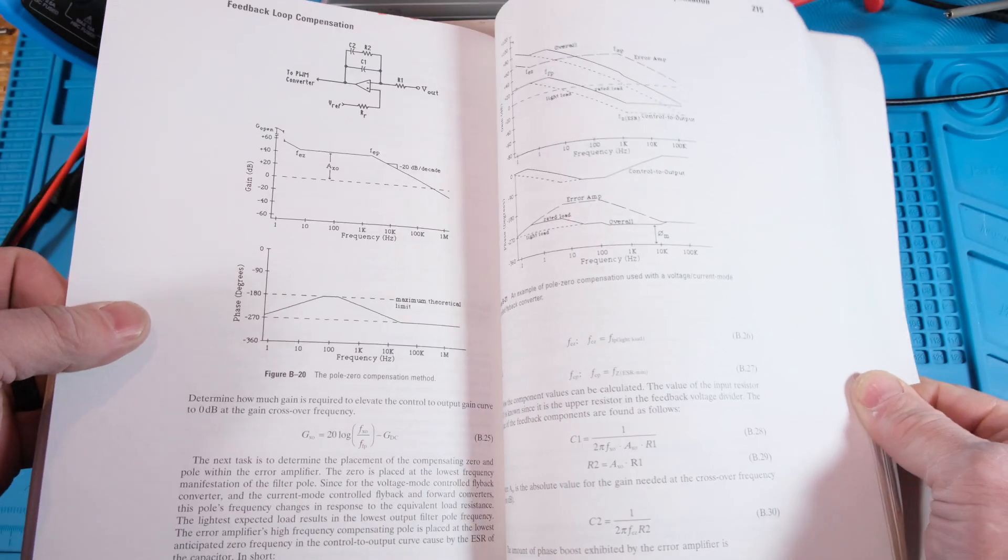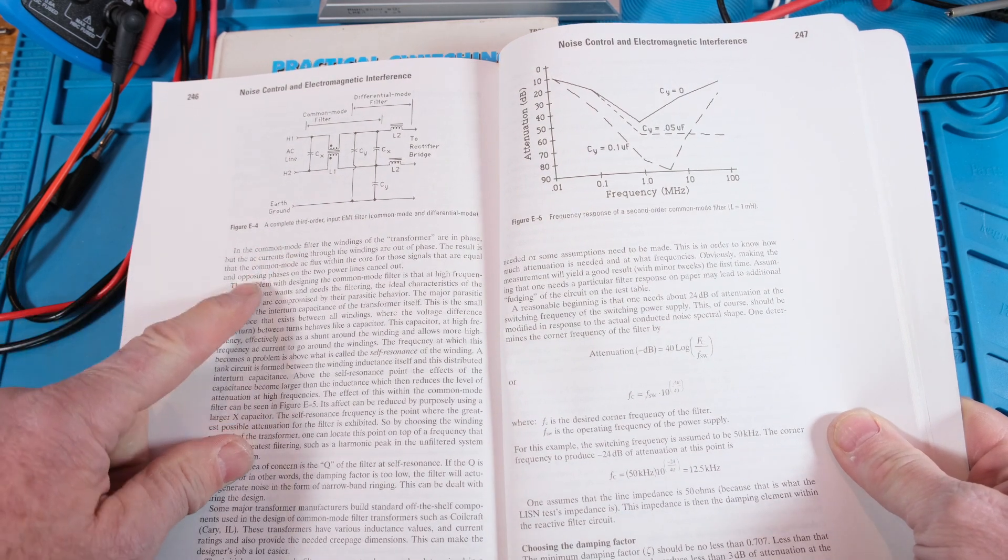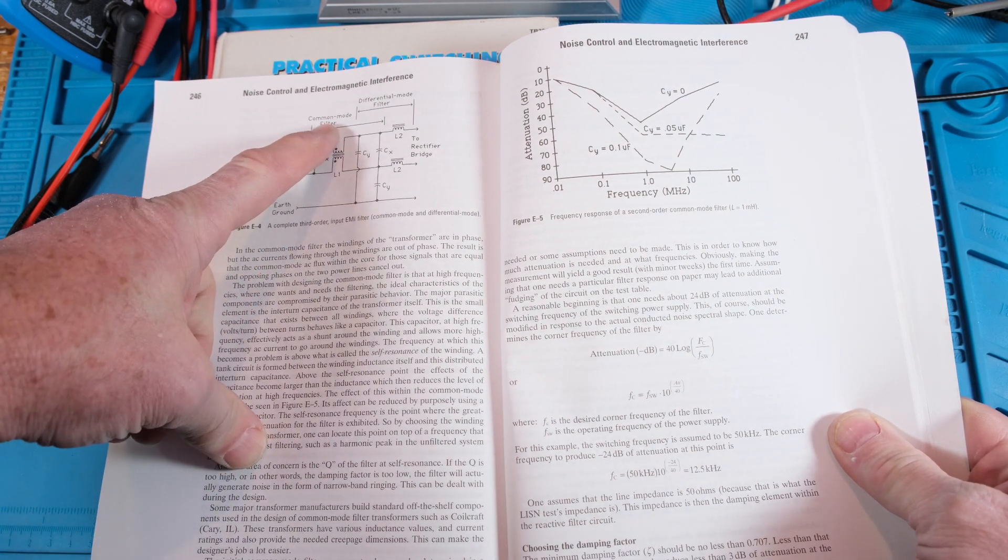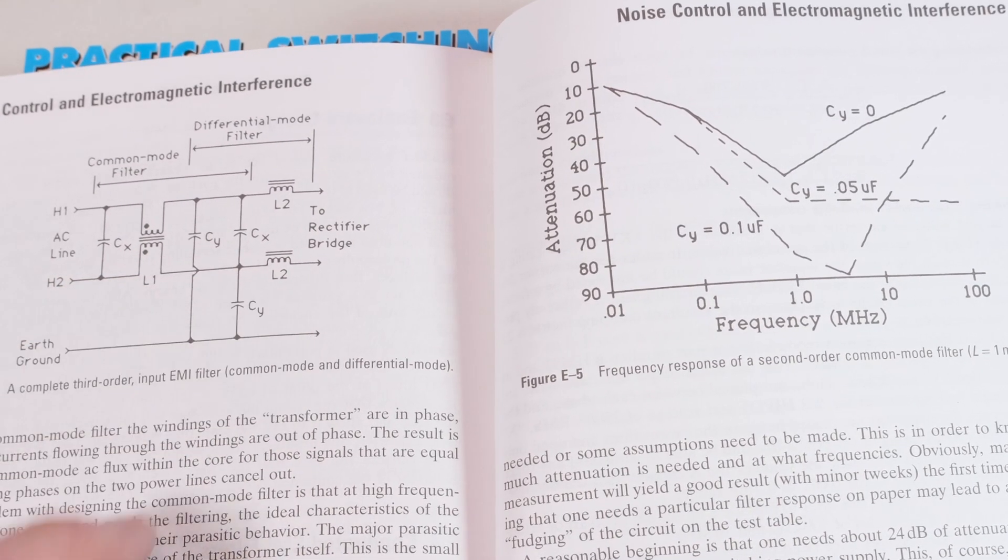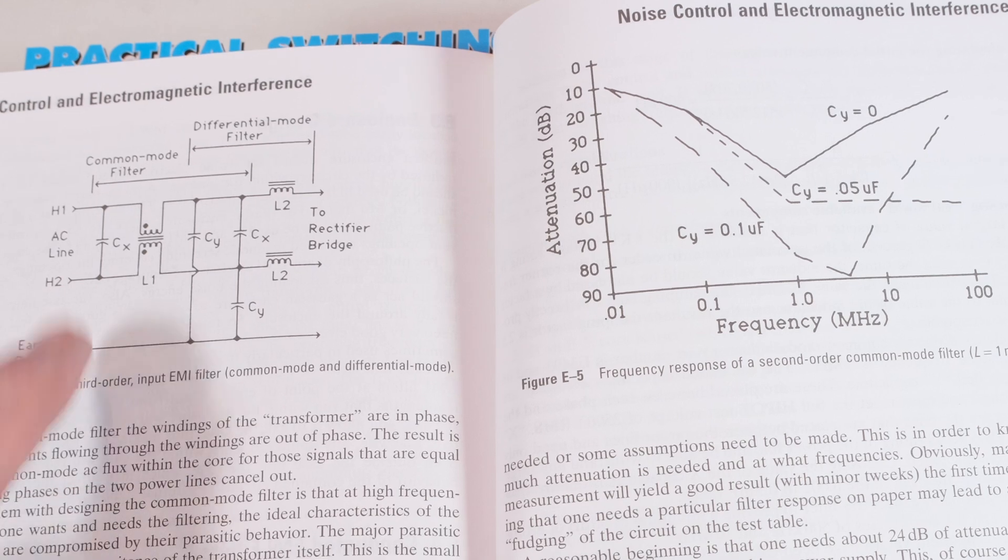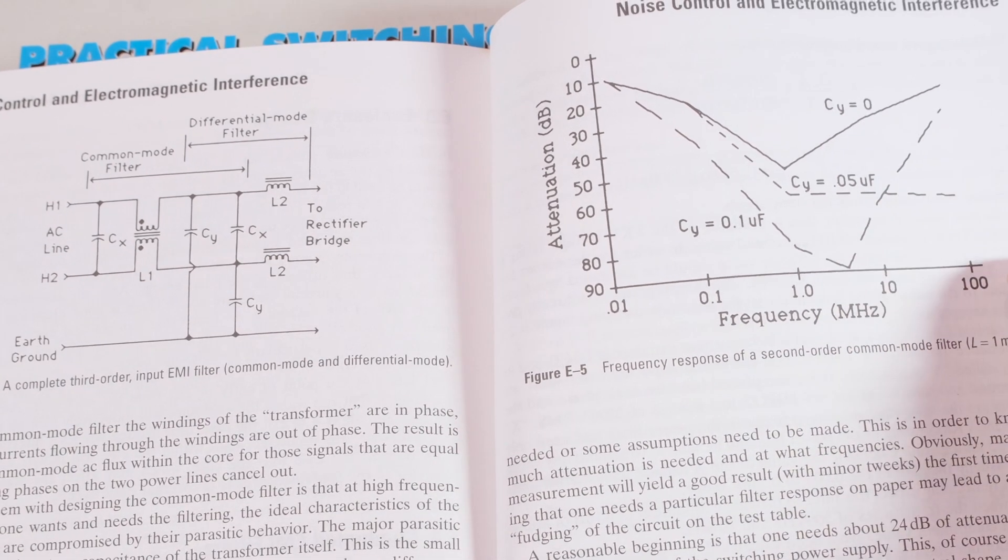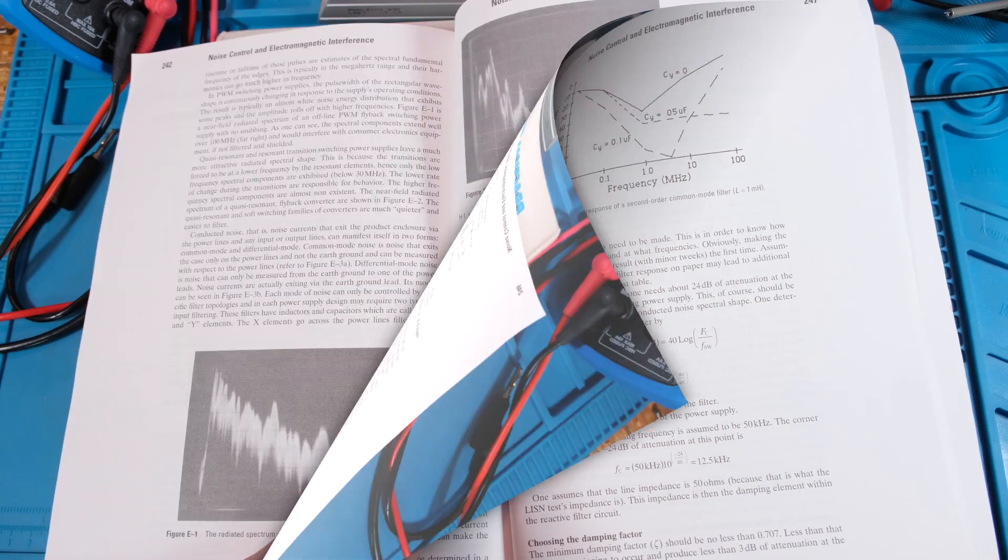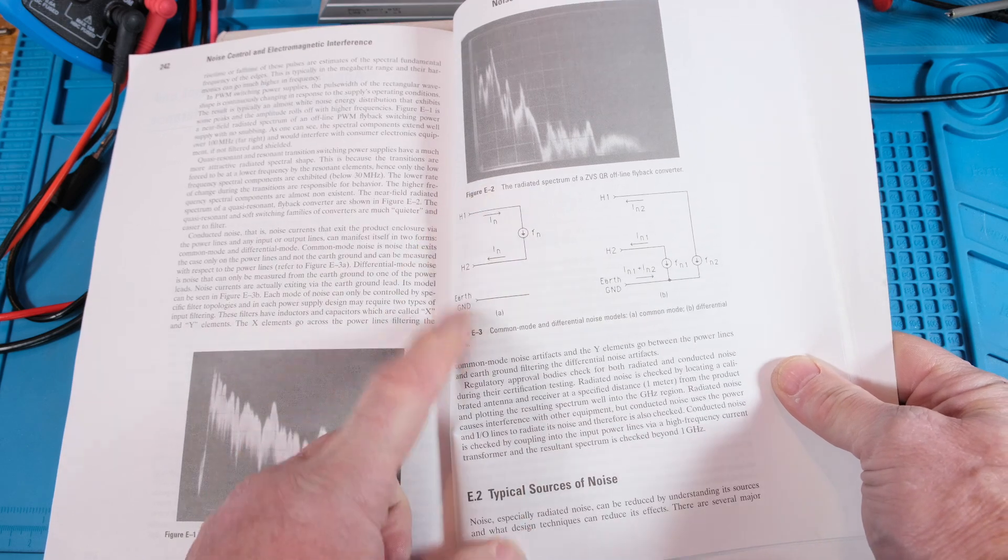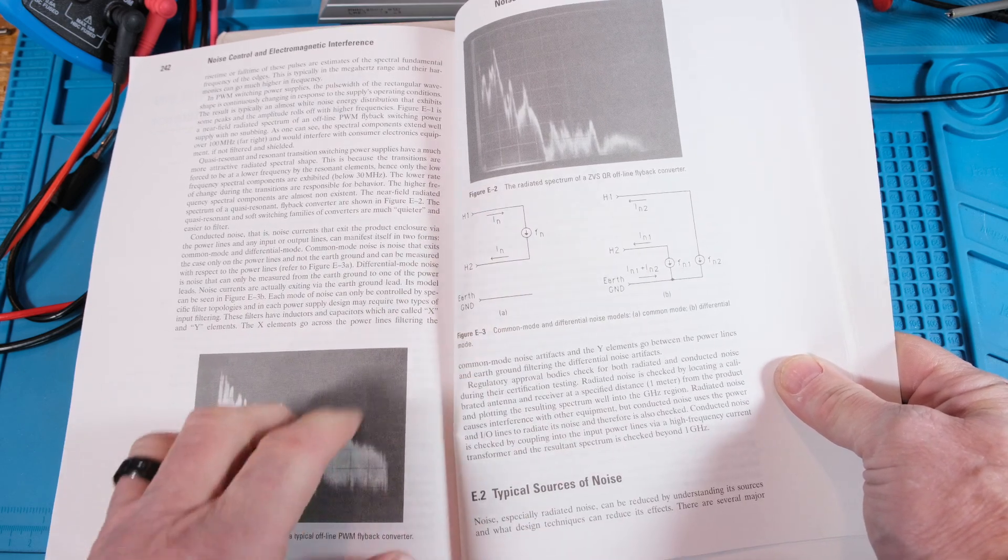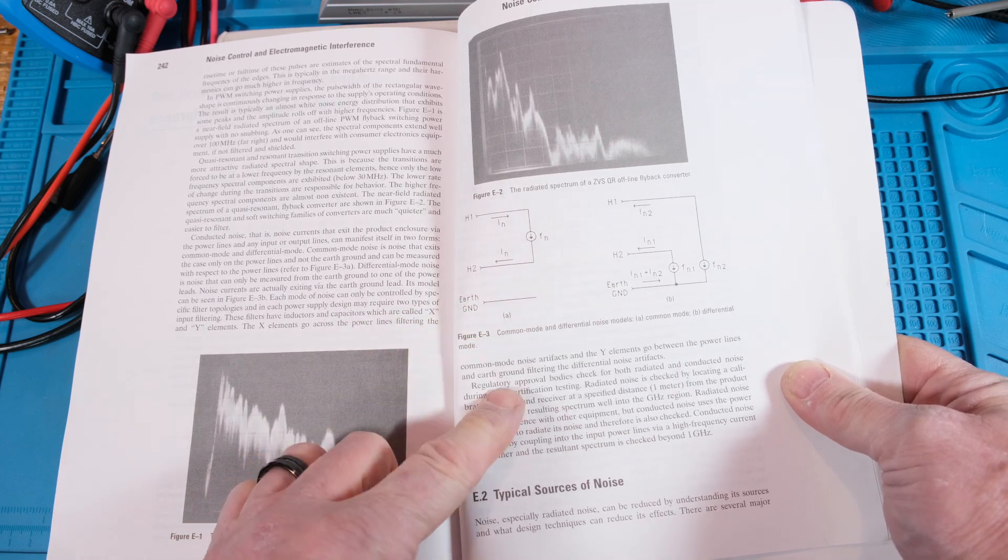And there's an EMI section. He's talking about common mode section, differential mode section, your Y capacitors, your X capacitors, common choke, your differential chokes, and some typical curves you might expect. And he does spend some time to show you some graphs, some EMI noise, and to talk about the difference between common mode and differential mode.